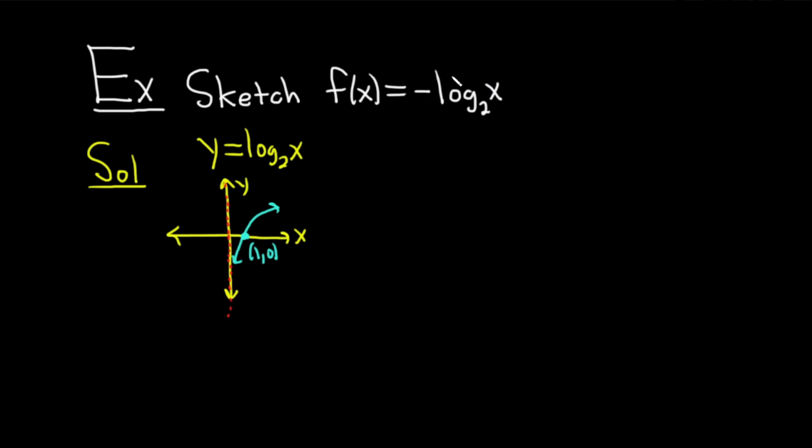So because we have a minus sign in front of the actual y, in front of the actual function, we're going to reflect across the x-axis. So the trick is whenever you have a negative in front of the y, you reflect across the other one, so across the x-axis. Just a really nice memory trick. Okay, so let's go ahead and do our graph.